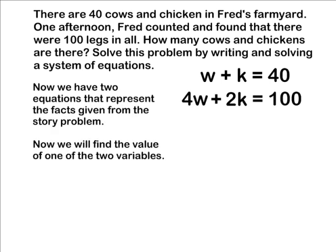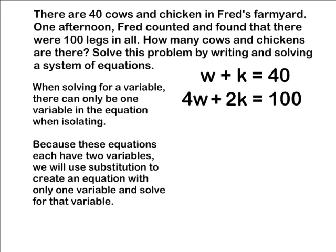Now we have two equations representing the facts from the story problem. Now that we have a system of equations, this allows us to use substitution to figure out the value of either w or k. Because these equations each have two variables, we'll use substitution to create an equation with only one variable.